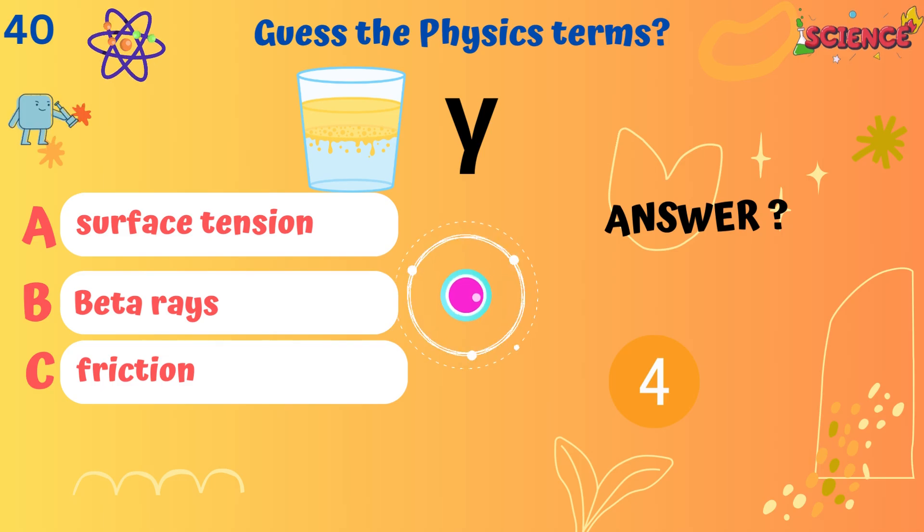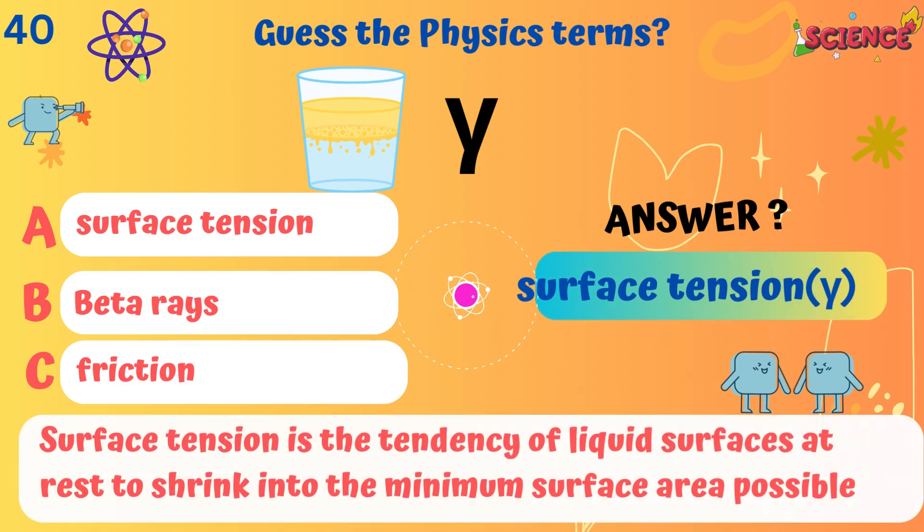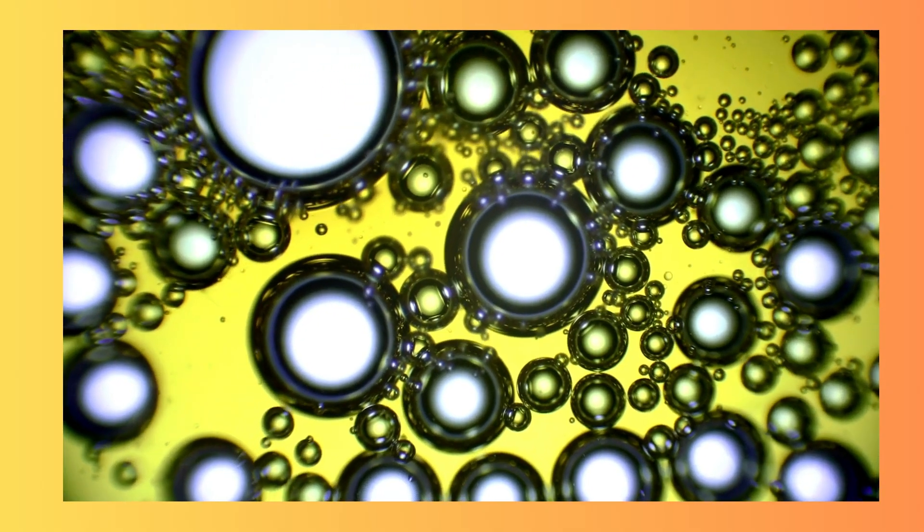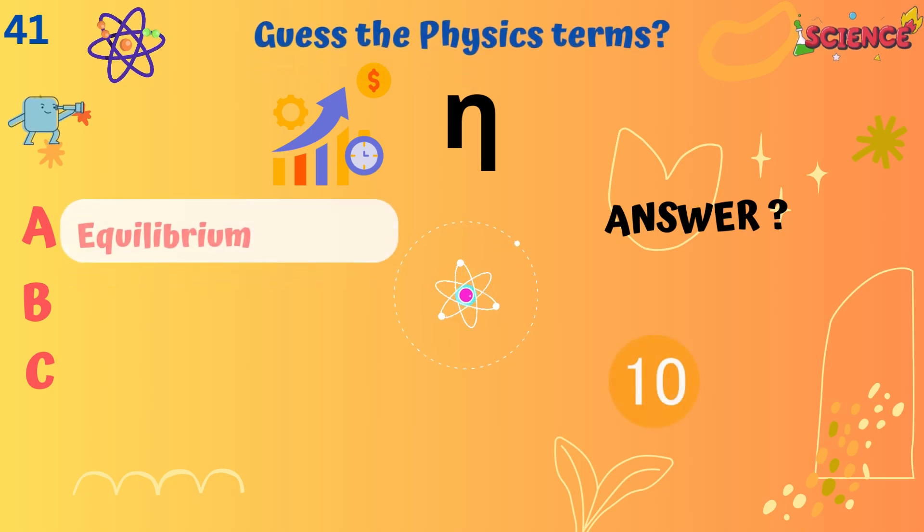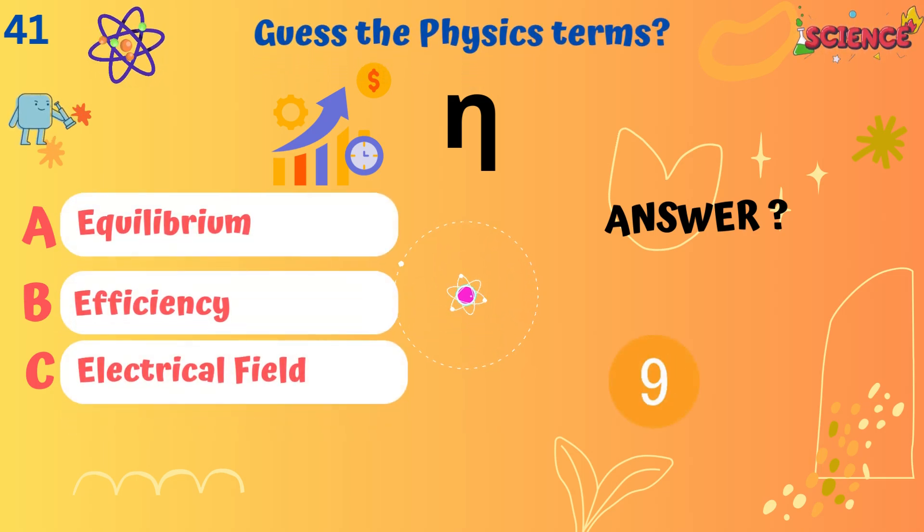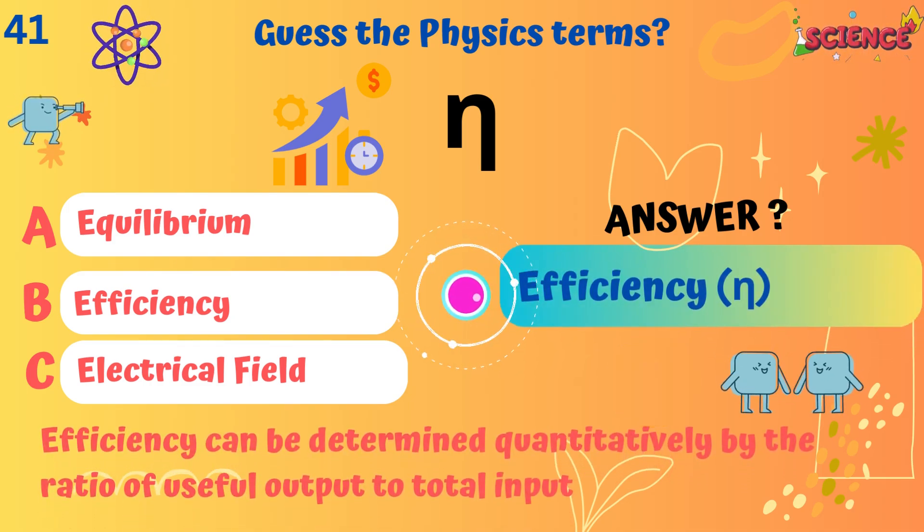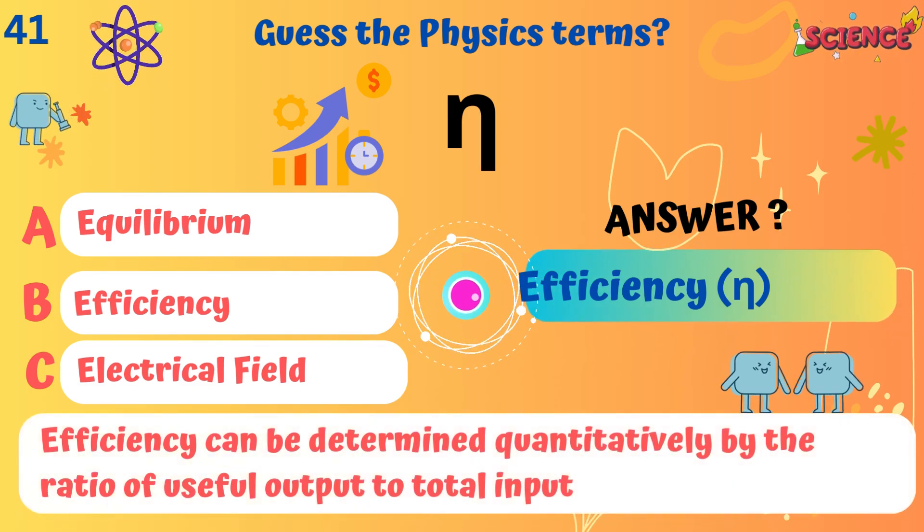Surface tension. Surface tension is the tendency of liquid surfaces at rest to shrink into the minimum surface area possible. Efficiency. Efficiency can be determined quantitatively by the ratio of useful output to total input.